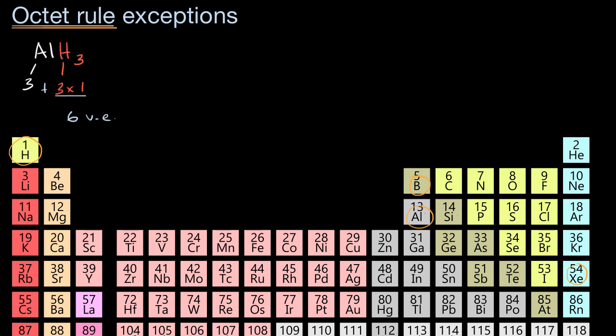Now, the next step is to try to draw the structure with some covalent bonds. We don't wanna make hydrogen our central atom, that would be very atypical. So let's put aluminum in the center, and then we're gonna have three hydrogens: one, two, and three.